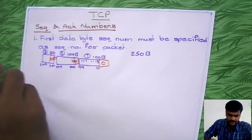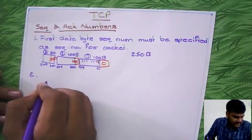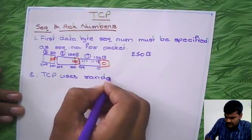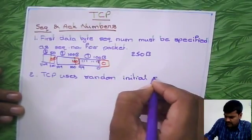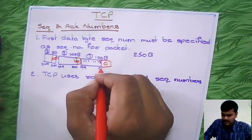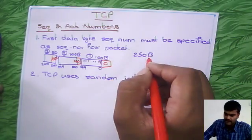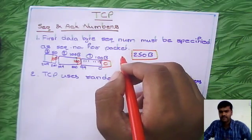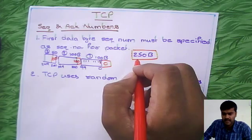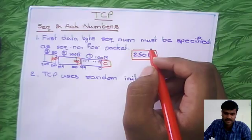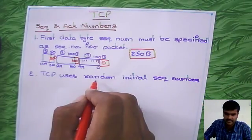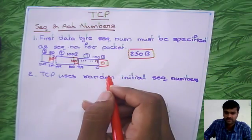TCP uses random initial sequence numbers. When dividing data into packets, we do not always have to start with 0 for the first byte of the first packet — we can take any sequence number randomly. But after that initial number, you should continue sequentially using modulus operation.